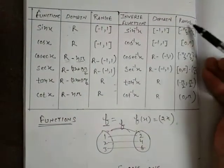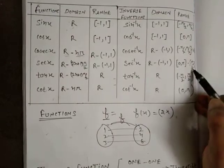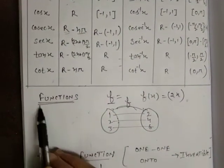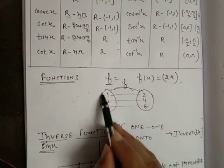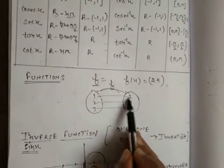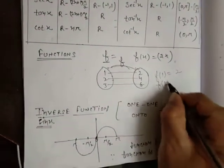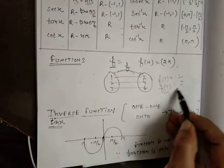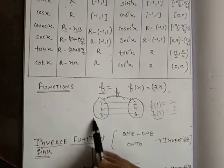In the inverse function, whatever is your domain becomes your range, and whatever is the range becomes your domain. The function itself is the same. In 11th class, it was well explained what a function is: every element of the domain must have exactly one image. It is not possible that f(1) has value 2 and also value 3 — this is not possible in a function. Every distinct element has a distinct image.